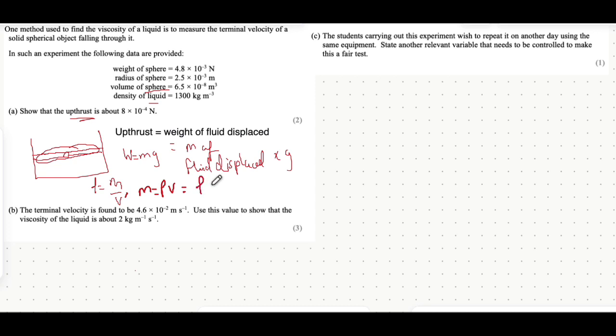We can say that the density of the fluid multiplied by the volume of fluid that's displaced, which is equal to the volume of the sphere. These are both powers of minus 3 and this is the power of minus 8. You can multiply onto that g and that will give you the weight of fluid that's displaced.